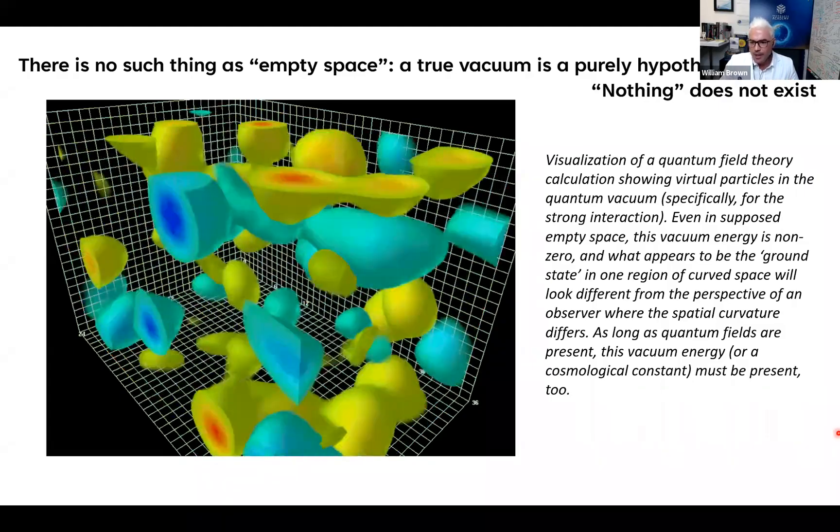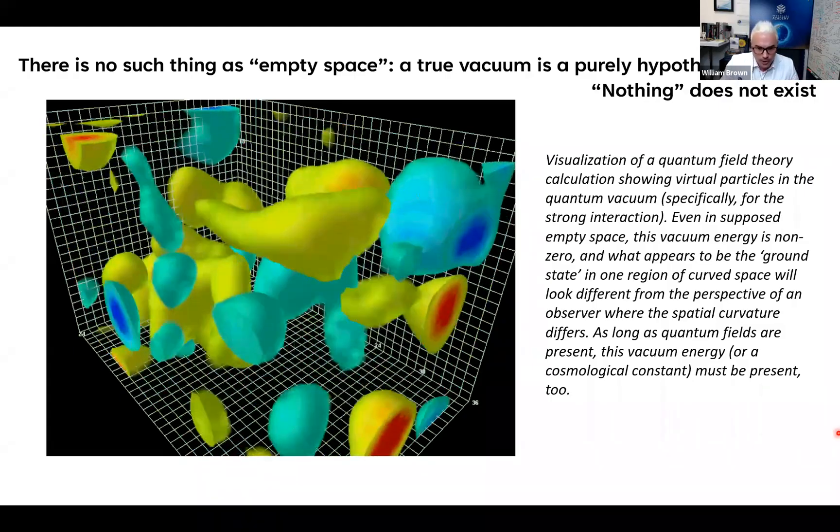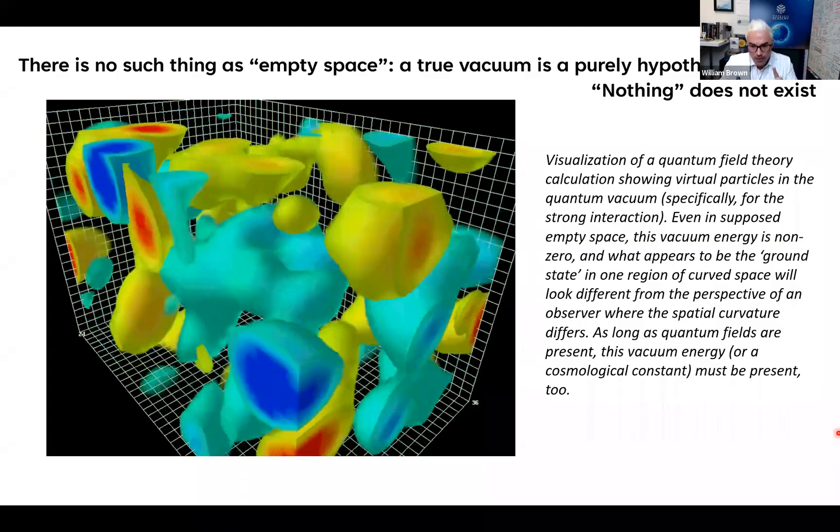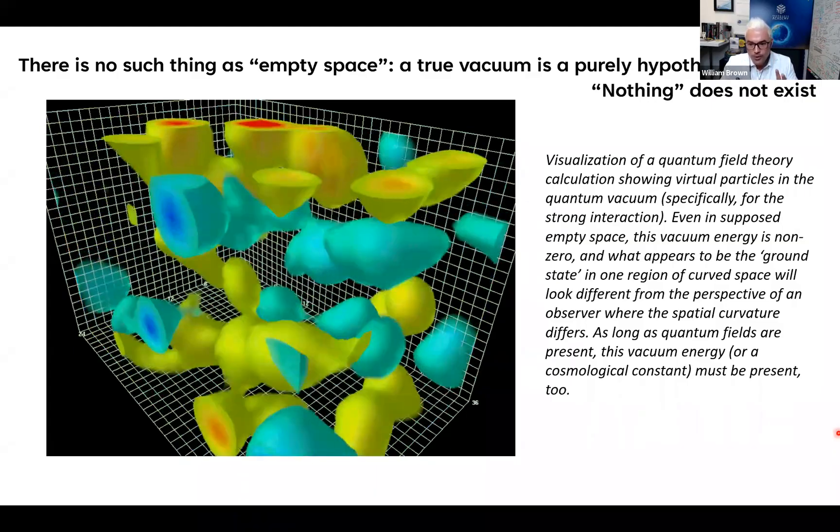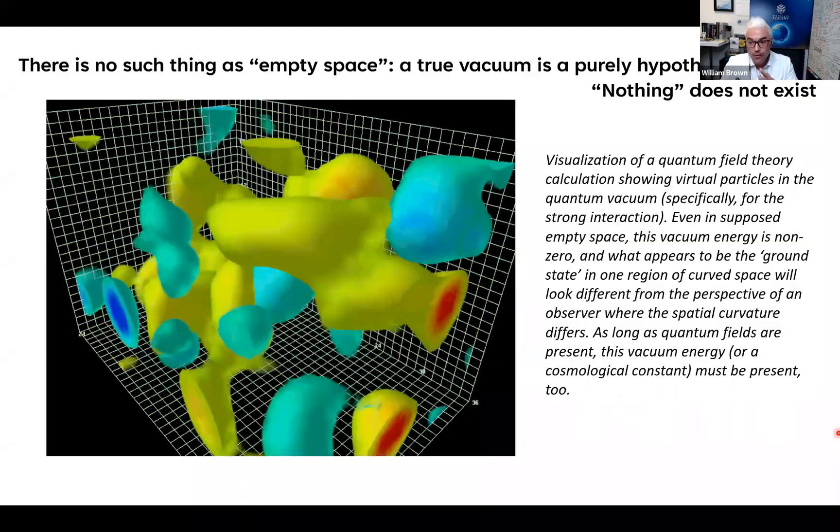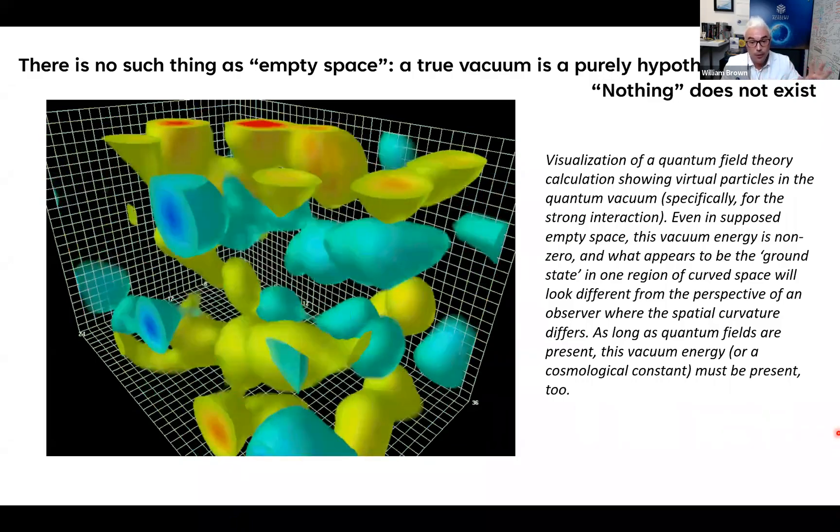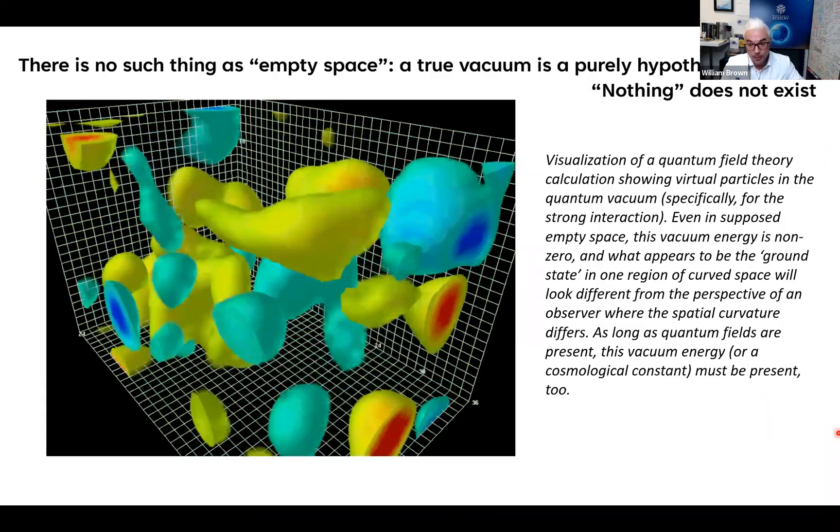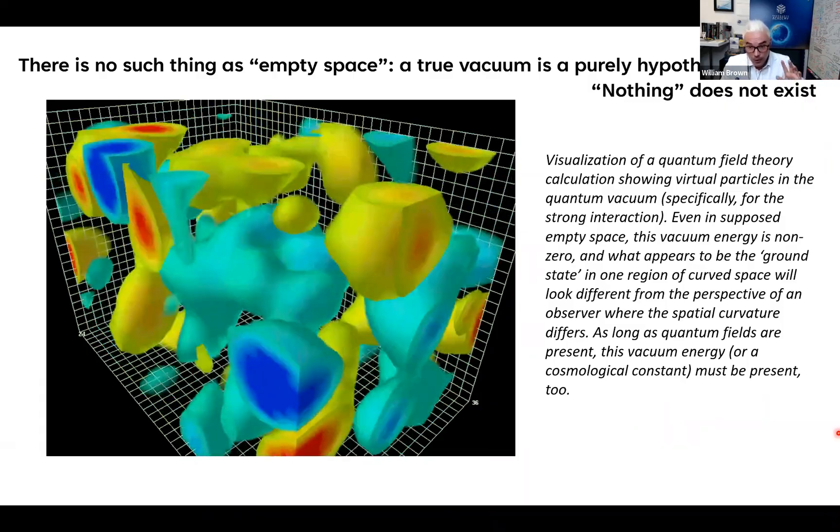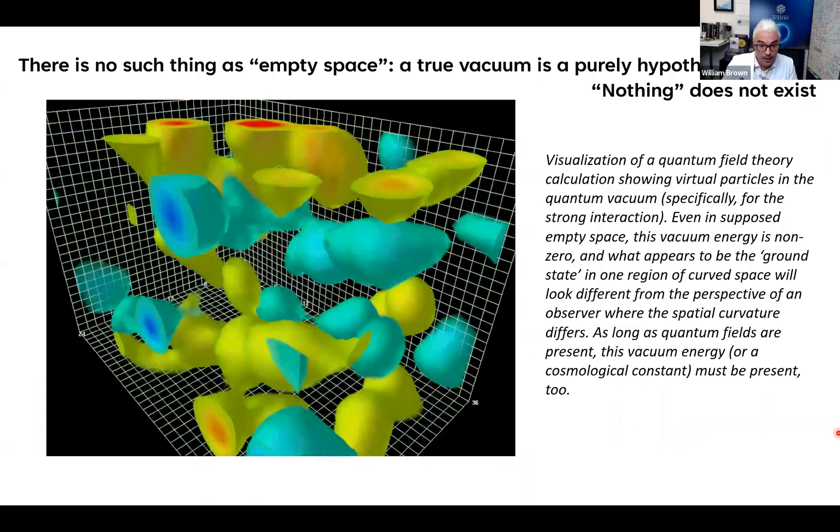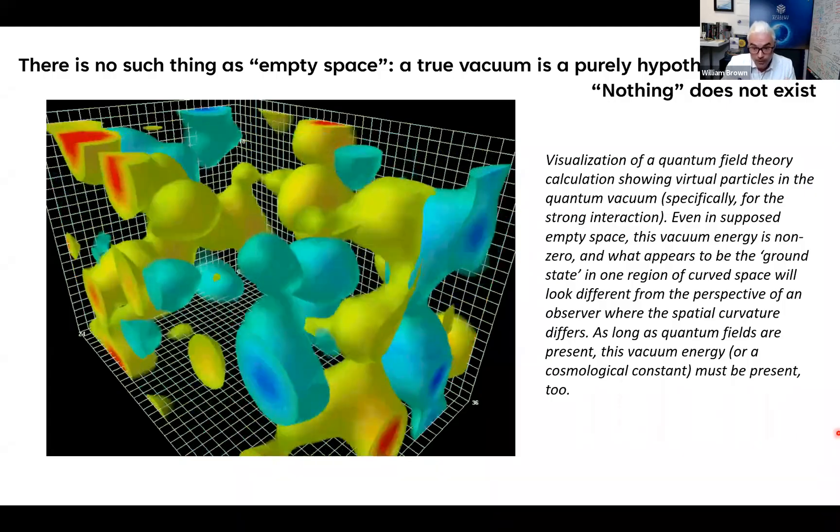In classical physics, a vacuum is totally devoid of energy or substance. In modern physics, however, all forces and associated particles are field-like, and their manifestation is a result of excitations of the respective quantum field. As such, according to quantum field theory, even in a vacuum, there are quantum fields.